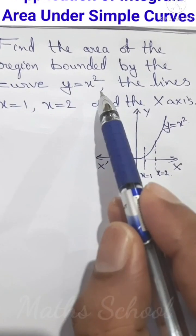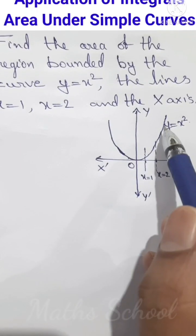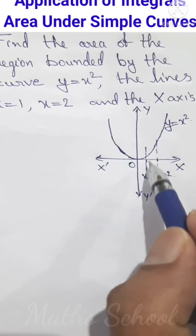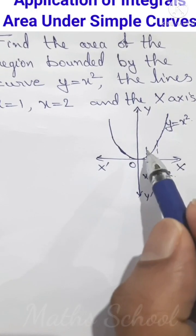The curve y = x² is a parabola with focus on the positive side of the y-axis. And the lines x = 1 and x = 2 are two parallel lines.